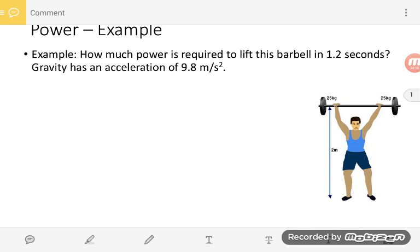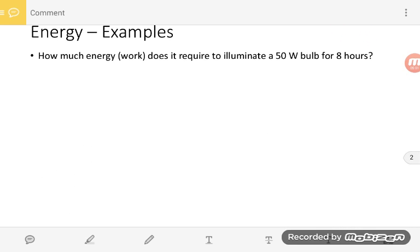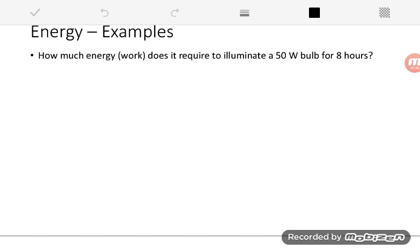Let's look at another example. How much energy or work does it require to illuminate a 50 watt bulb for 8 hours? So what I like to do, of course, is make a list. So it's asking for how much work is required. It's telling me that it's a 50 watt bulb. And it's going to take place over 8 hours.